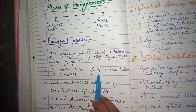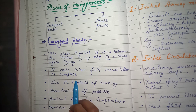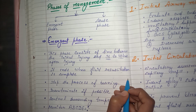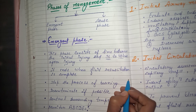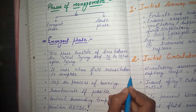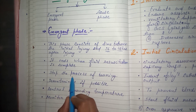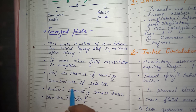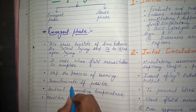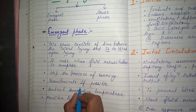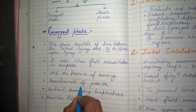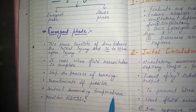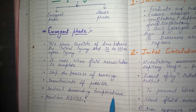The emergent phase ends when fluid resuscitation is complete — meaning when the fluid imbalance in the patient's body is corrected and fluid balance is maintained. Other steps in this phase include stopping the burning process, decontaminating to remove chances of infection if possible, and controlling the surrounding temperature by maintaining proper room temperature for the patient.